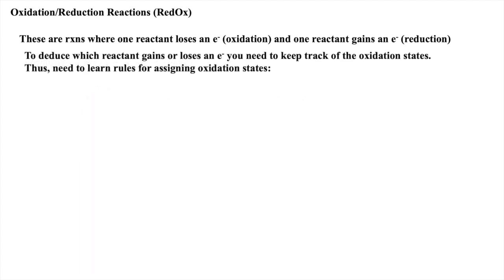To deduce which atom gains electrons — reduction — and which atoms lose electrons — oxidation — one needs to assign oxidation states for reactants and products. Thus, rules for assigning oxidation states are imperative to learn.